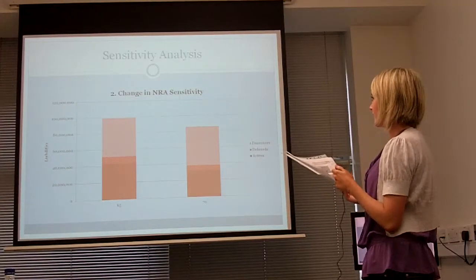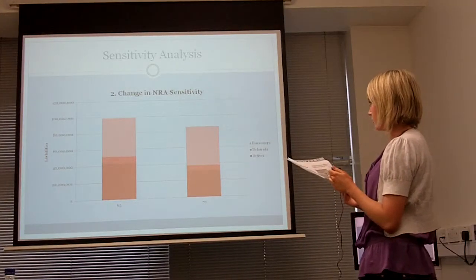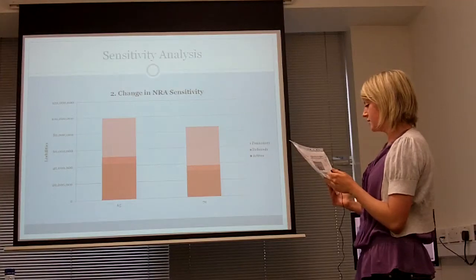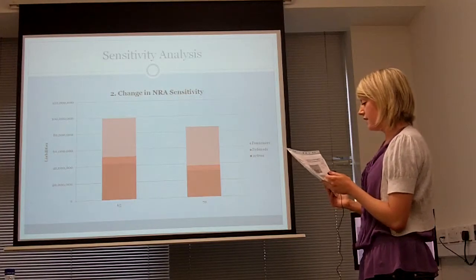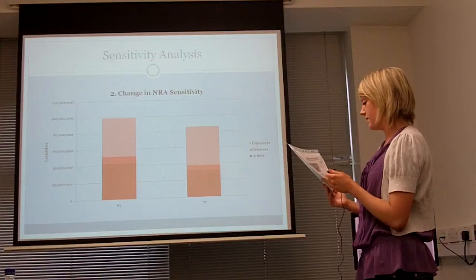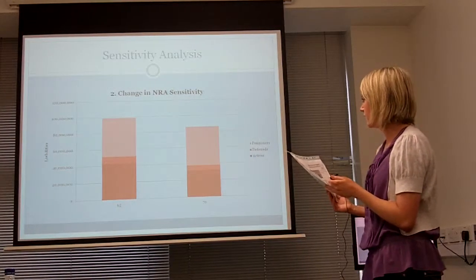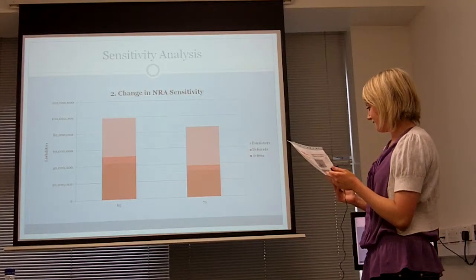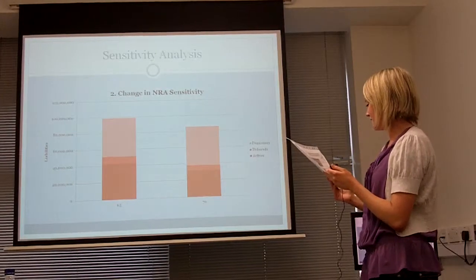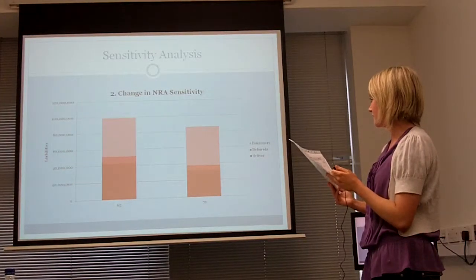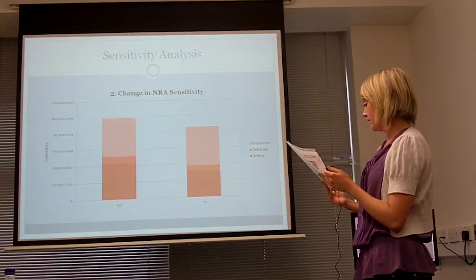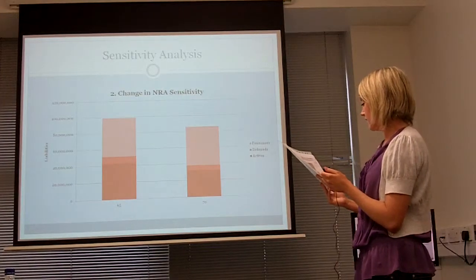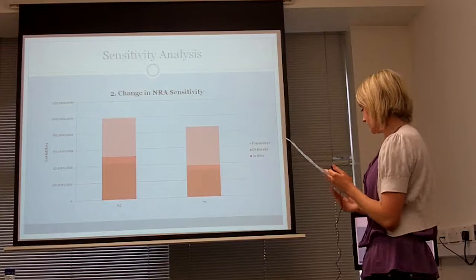The second sensitivity analysis we carried out was on the normal retirement age. If the scheme were to change the normal retirement age from 65 to 70, the liabilities of the active and deferred members are approximately reduced by 25%, as you can see from the graph. This decrease has led the UK government to strongly consider raising the normal retirement age to 70, as this would be an effective method of reducing the liabilities of the scheme.